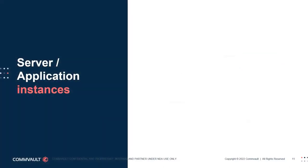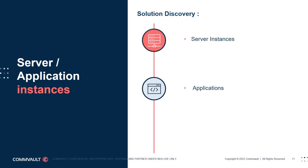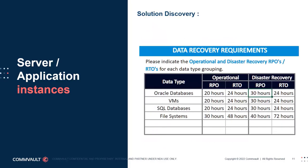Taking solution discovery a step further involves collecting even more granular information about the server instances, applications, and other production workloads from each site. This site discovery checklist is just one example of how you can collect this level of information, although you may need to create something specific for your opportunity, or the customer may provide their own format. Either way, this level of information would serve you well all the way through to a detailed low-level design document. Click on the Resources link in the top right-hand corner of this window to download a blank copy of the site discovery checklist.